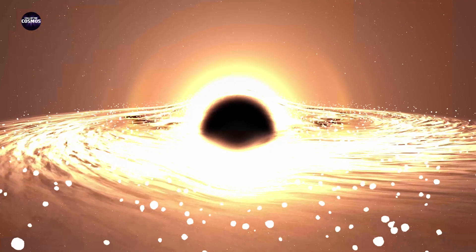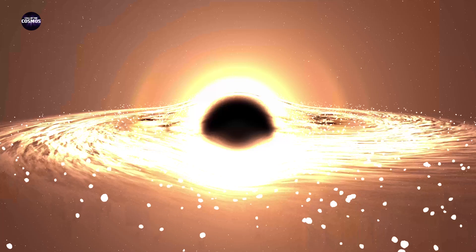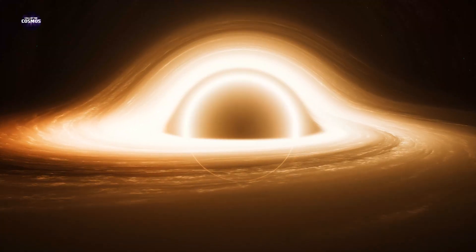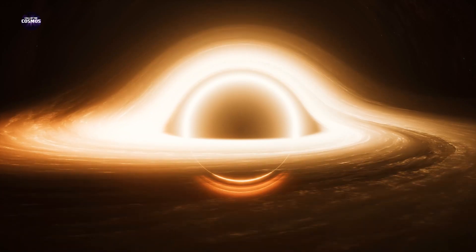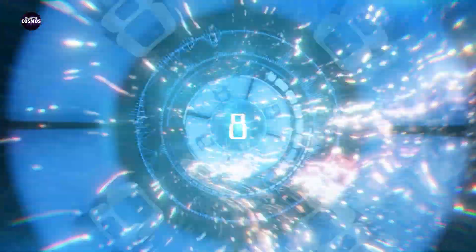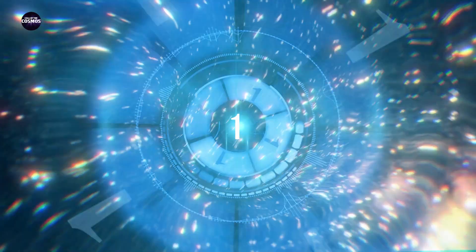So a black hole can technically cheat death by tearing and ripping apart and gorging on more and more material from around it. But that would just be akin to the universe granting a black hole, pleading for its life, some more time to live. For at some point, the universe will run out of material to feed the ravenous black hole. And then the countdown on its clock of death will start ticking.